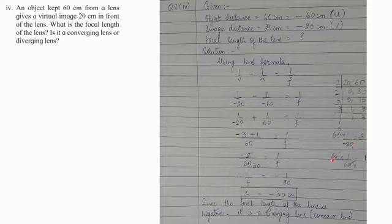And 1 upon 60 into 60 that gives you 1. Here you will have minus 3 plus 1 upon 60 is equal to 1 upon F. Minus 3 plus 1 is minus 2 upon 60. We reduce it to lowest term that we get 1 upon 30.